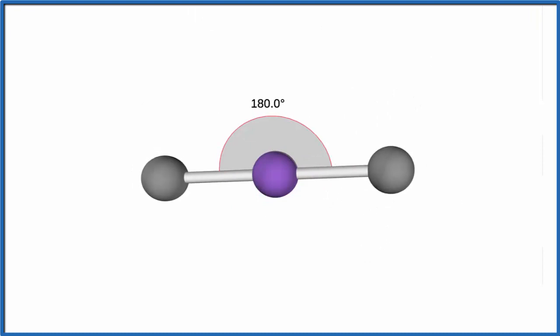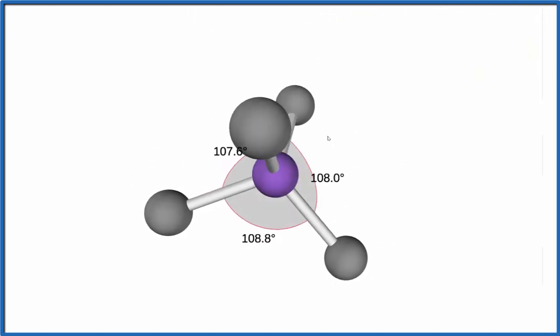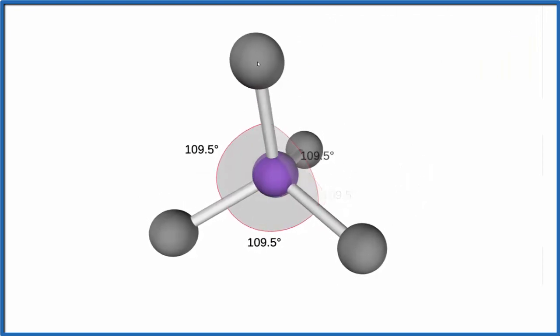Then we have two fluorines - one, two - and you can see we end up with this tetrahedral molecular geometry. The bond angles would be about 109.5°, a little different here again because we have fluorines and hydrogens mixed.